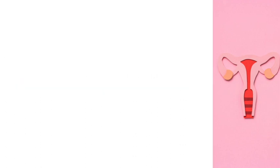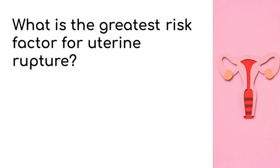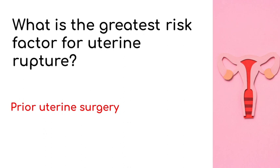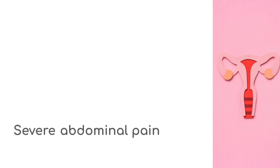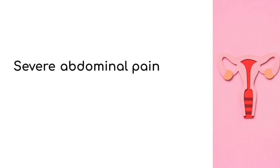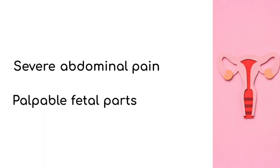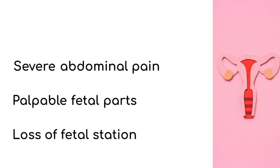What is the greatest risk factor for uterine rupture? Prior uterine surgery, which can include a c-section or a myomectomy. Other risk factors include induction of labor, prolonged labor, congenital uterine anomalies, and fetal macrosomia. If a patient presents with severe abdominal pain and physical examination reveals palpable fetal parts and a loss of fetal station, we must have a very high clinical suspicion of uterine rupture.